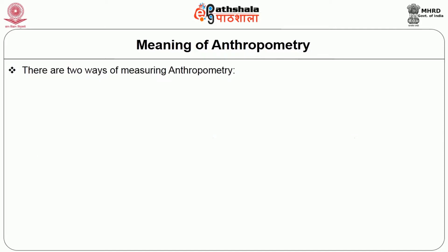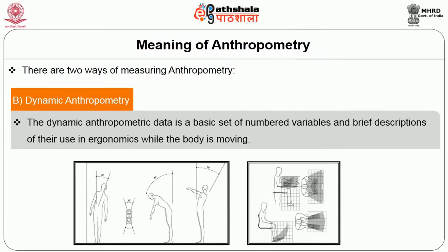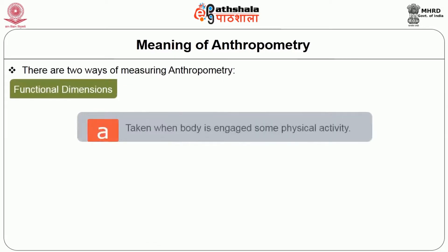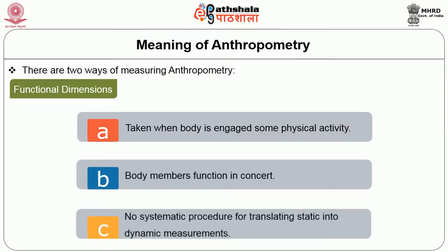Dynamic anthropometry data is a basic set of numbered variables and descriptions of their use in ergonomics while the body is in motion or a position. These are functional dimensions taken when the body is engaged in some physical activity. Body members function in concert, and there is no systematic procedure for translating static measurements into dynamic measurements.